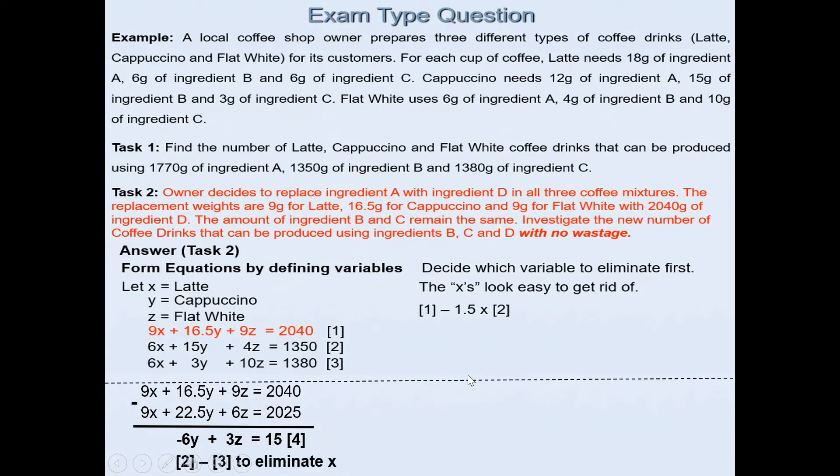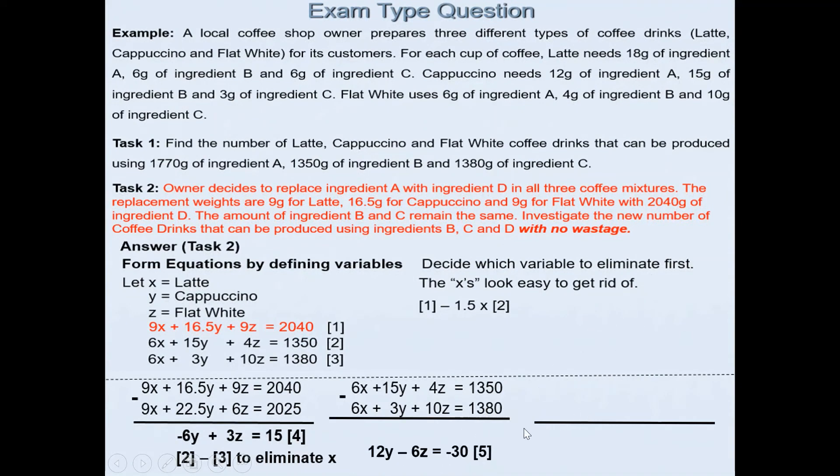We'll do the same thing and eliminate x. The coefficient of x for equations 2 and 3 is the same, which is 6, so it's easier for us to go equation 2 minus equation 3. So 6x + 15y + 4z = 1350, 6x + 3y + 10z = 1380. If I subtract the two, I will end up with 15 - 3, which is 12y. 4 - 10, watch out, it's 4 minus 10 is -6z. And then 1350 - 1380 is -30. So always be careful when you are dealing with negative numbers. And that's our fifth equation.